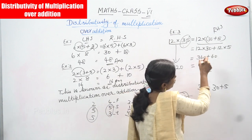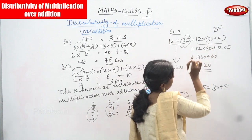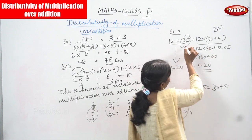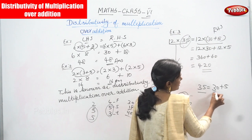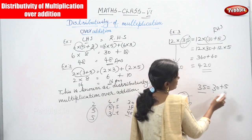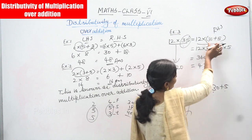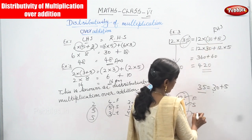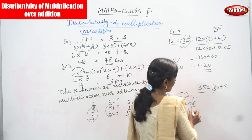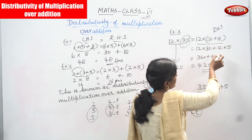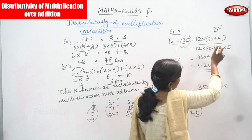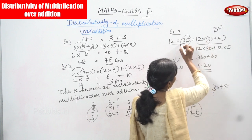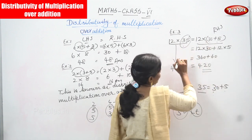Now apply the distributive property of multiplication over addition. Take the second number 35 and split it: 30 plus 5. So 12 is the first number, 30 is the second, and 5 is the third. Second and third numbers are kept inside the bracket. Solve the bracket first: 30 plus 5 equals 35, and 35 into 12 gives 420.